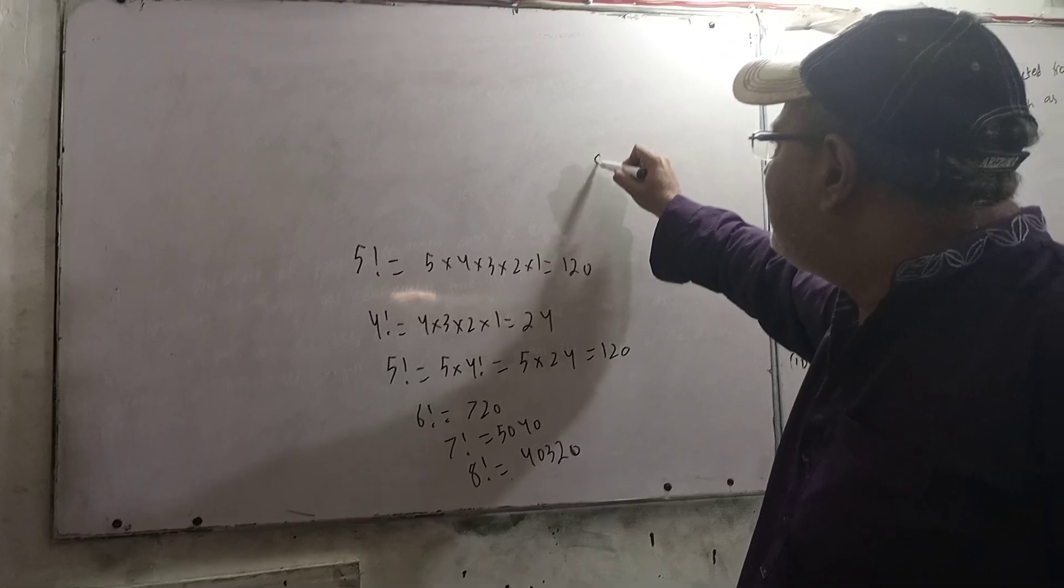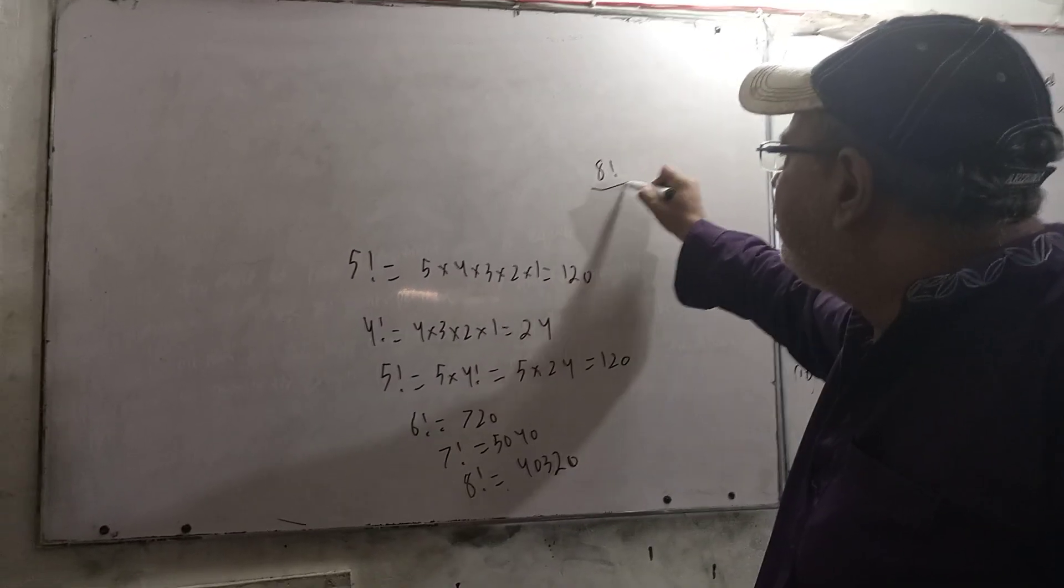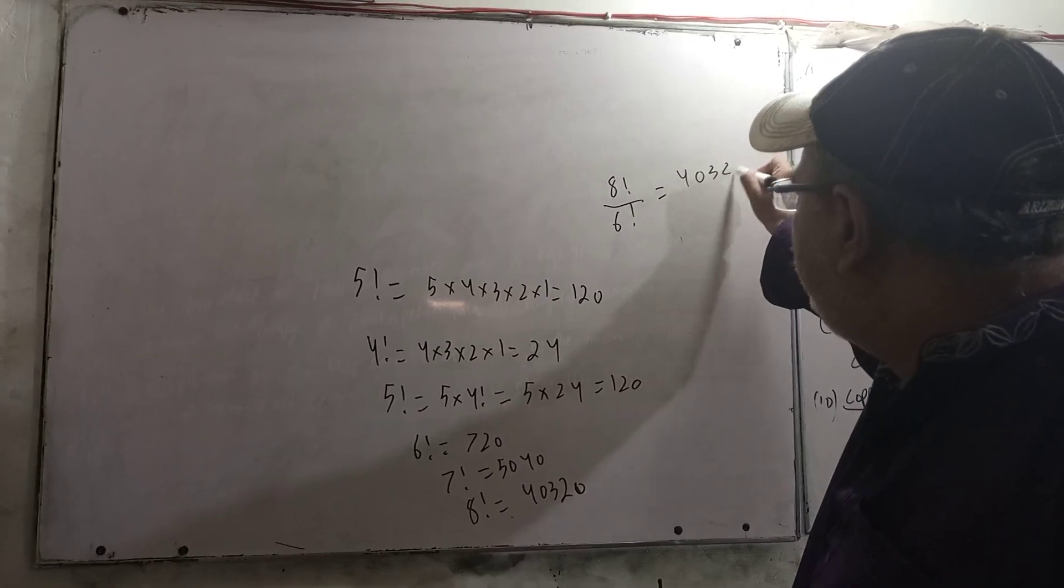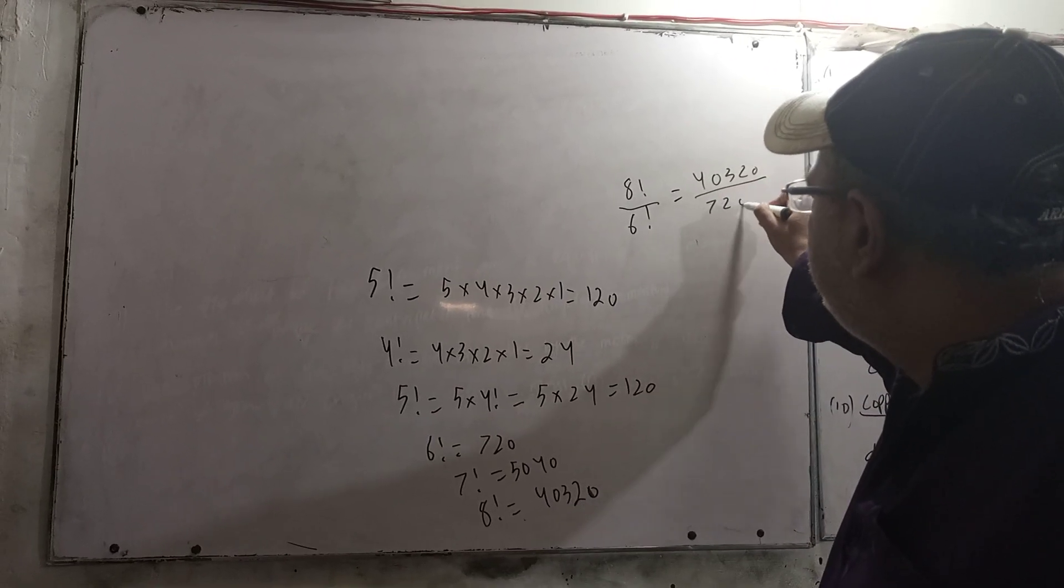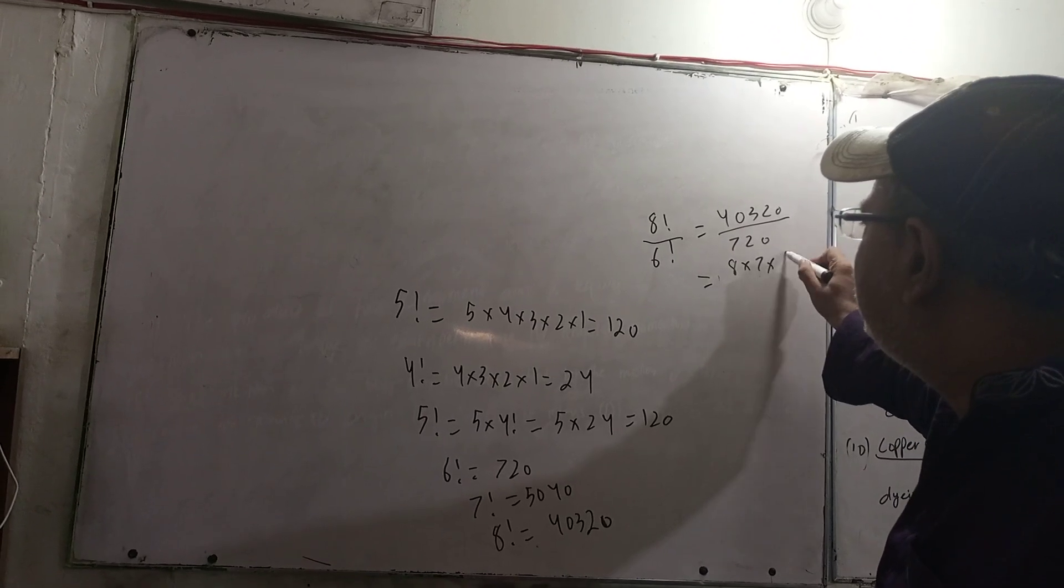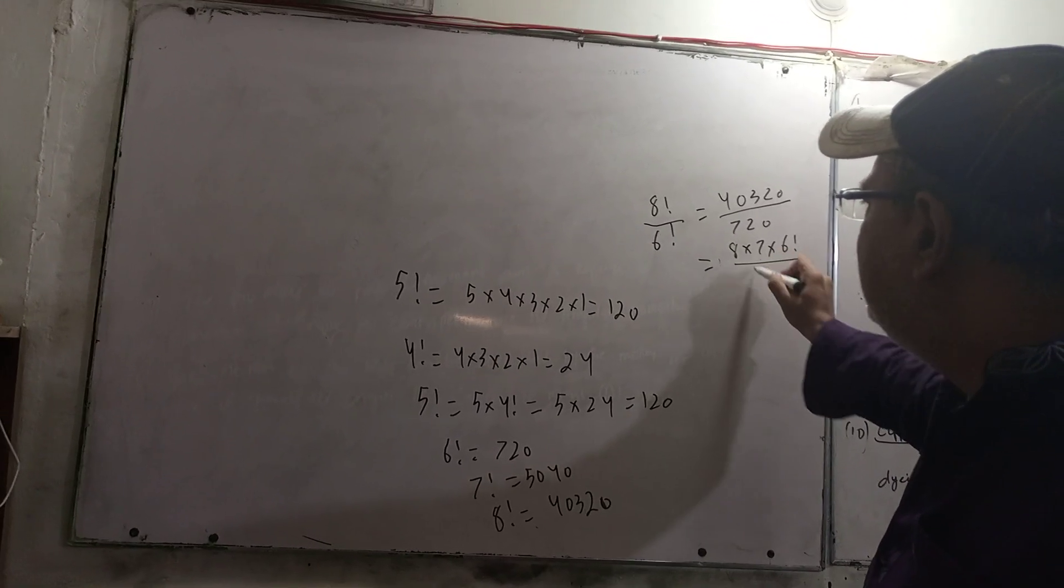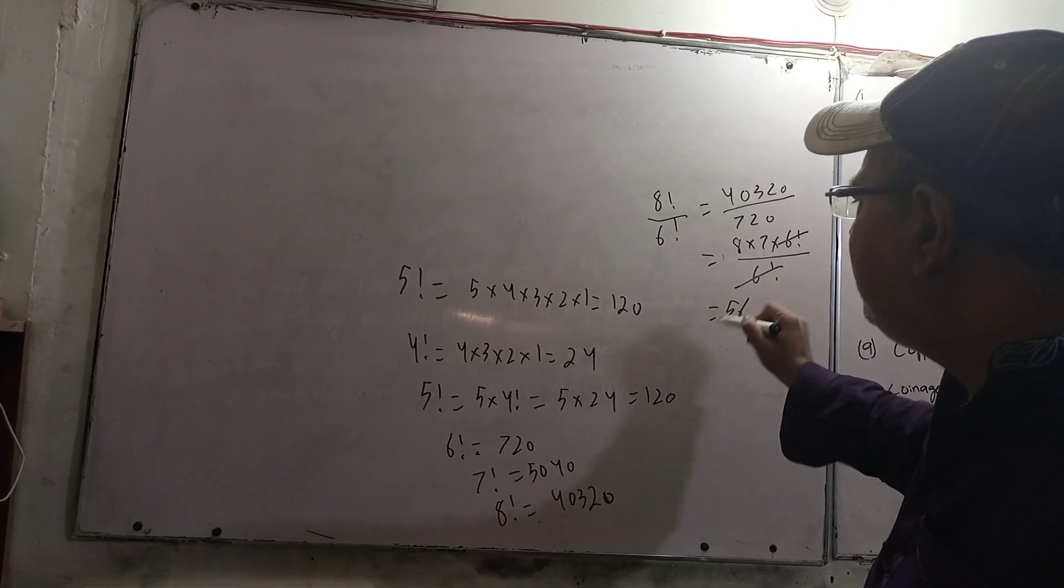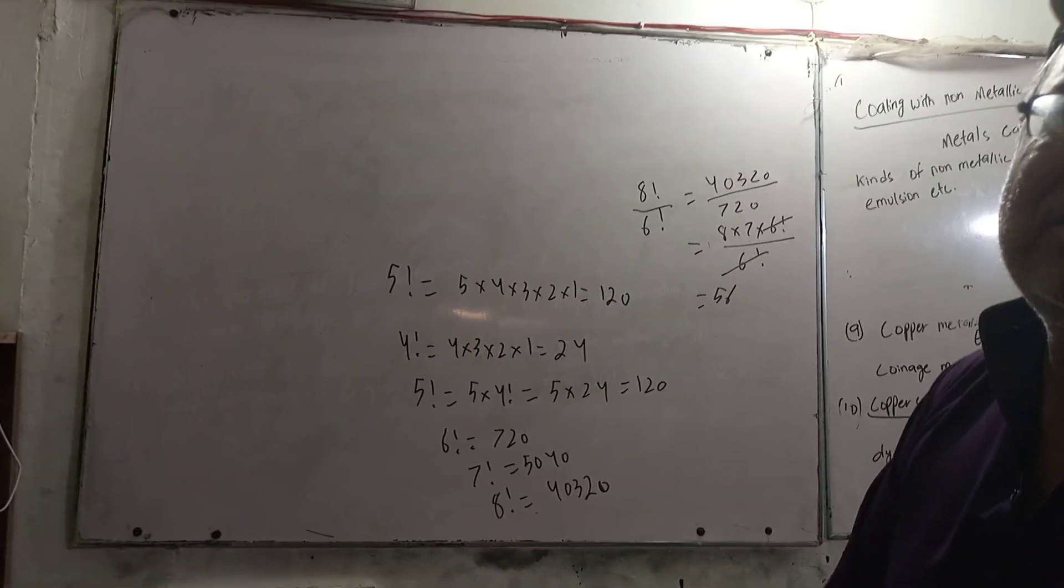Now let's look at the factorial. If you say, if you're looking at 8 factorial divided by 6 factorial, then you should divide it. You can write 8 factorial as 8×7×6 factorial. 6 factorial cancels with 6 factorial. You can write 8×7. So you need to simplify 8 factorial divided by 6 factorial this way.